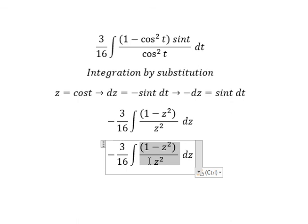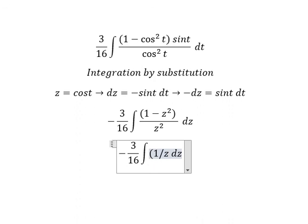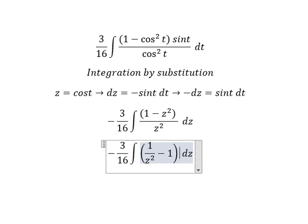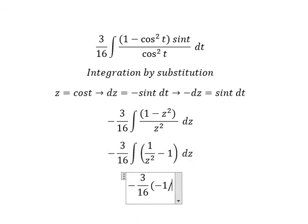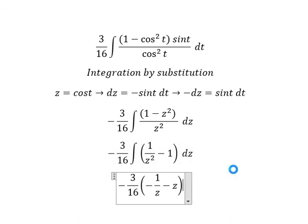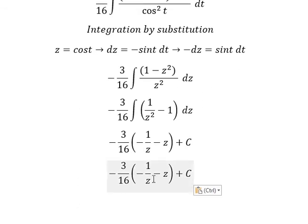After substituting, we have the integral of 1 over z squared minus 1. The integral of 1 over z squared gives negative 1 over z, and the integral of 1 gives z. We add the constant C. Then we substitute back: z equals cos t.